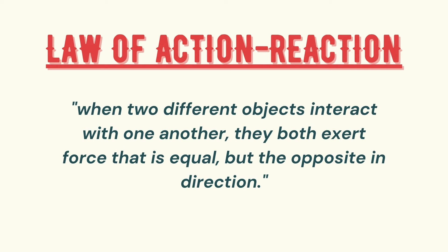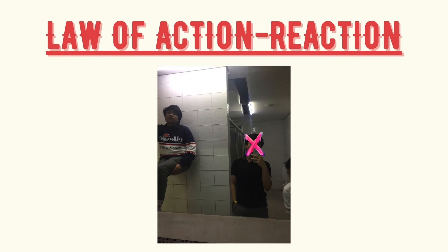The last of Newton's laws of motion is the law of action and reaction, meaning that when two different objects interact with one another, they both exert a force that is equal but opposite in direction — thus giving it the title of action and reaction. In the picture being shown, there is a guy leaning against a wall above the ground. The guy exerts force onto the wall for a certain amount of energy, and due to this, the wall also gives back the same amount of energy toward the guy, creating the action and reaction chain.